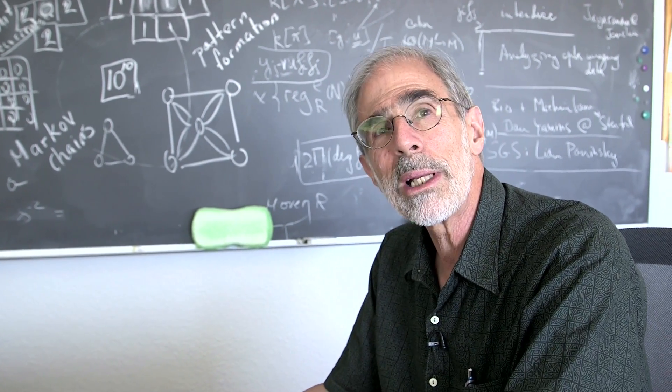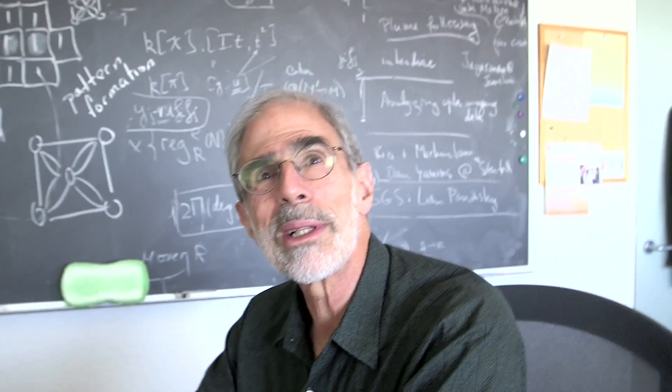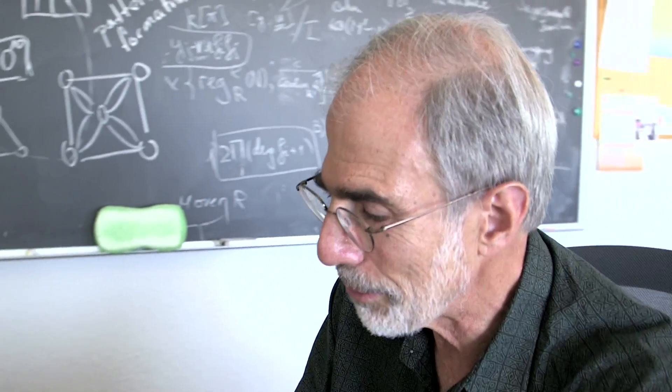For instance, why 3n plus 1? Why not 3n minus 1? Brady, let's try 3n minus 1. Let's do it with 7. Let's try 7 again, okay.